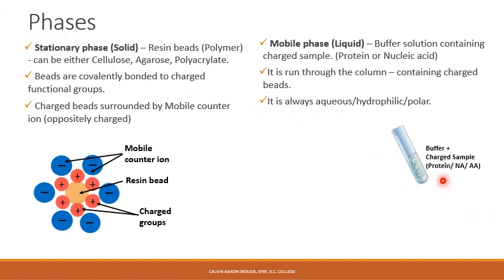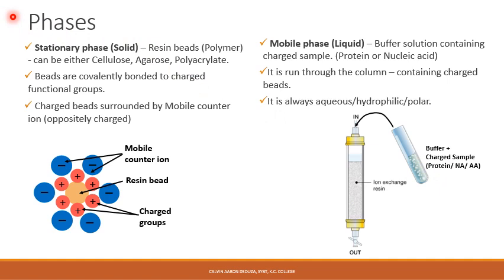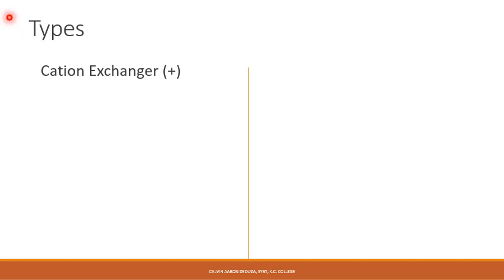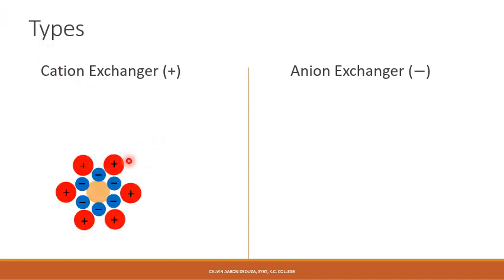You have the buffer and the charged sample — which could be protein, nucleic acid, or amino acid — and you add the mobile phase through the ion exchange column, allowing it to pass through and undergo separation. There are two distinct types of ion exchange chromatography: the cation exchanger and the anion exchanger. The cation exchanger tends to have negatively charged functional groups, and the positively charged proton groups of the sample are exchanged with those of the stationary phase.